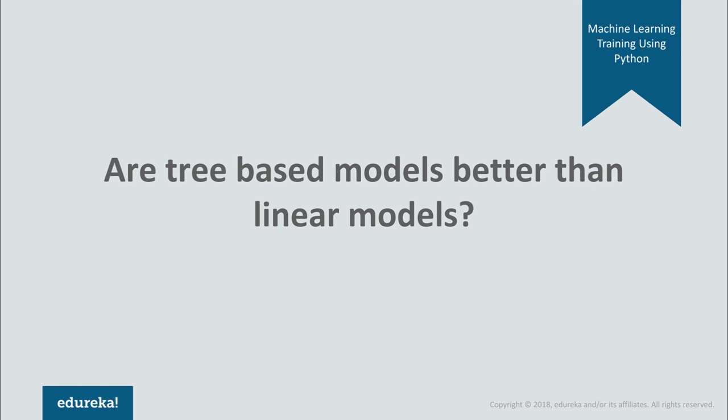A common question: is a tree-based model better than a linear model? The answer depends on the problem. If the relationship between dependent and independent variables is well approximated by a linear model, linear regression will outperform tree-based models. If there is high non-linearity and complex relationships, a tree model will outperform classical regression. If you need to build a model that is easy to explain, a decision tree is simpler to interpret than linear regression.